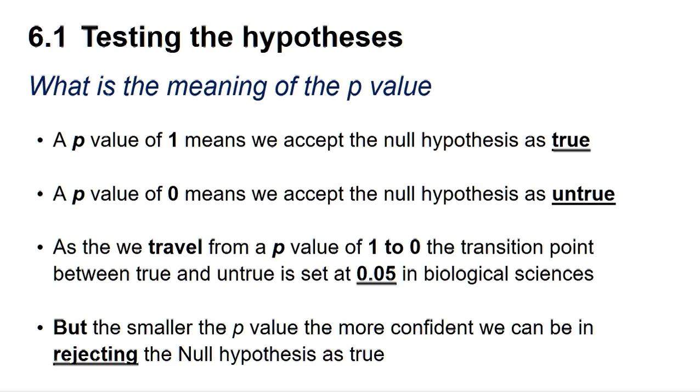A p-value of 1 means we can accept the null hypothesis as true, whereas a p-value of 0 means we can accept the null hypothesis as untrue. As we travel from a p-value of 1 to 0, the transition point between true and untrue is set at 0.05 in the biological sciences.